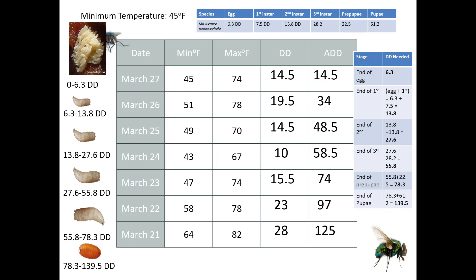What happens if I find second instar maggots on March 27th? The range is 13.8 to 27.6 degree days. 13.8 happens on March 27th, but 27.6 does not — we need to go to the day before. So now the range is from March 26th to March 27th. This is saying the body was available for colonization on either one of these two days, depending on where in that second instar this larva is. Since we can't tell that, we have to give a range.